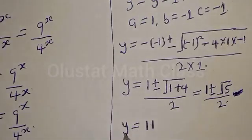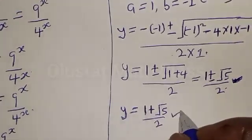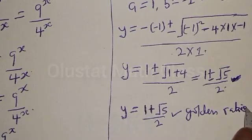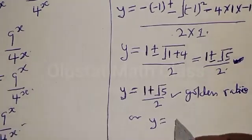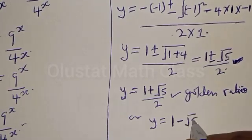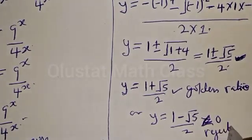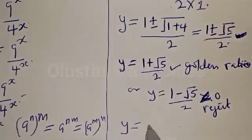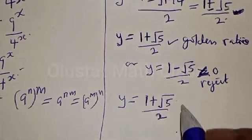Therefore y equals 1 plus root 5 over 2, which is the golden ratio. Or y equals 1 minus root 5 over 2, but this value is less than zero, so we reject it. Therefore the value of y equals 1 plus root 5 over 2, the golden ratio.